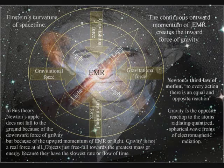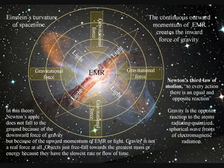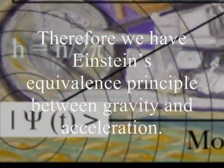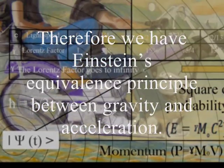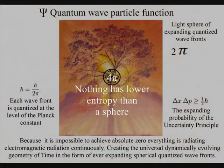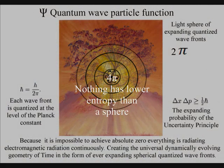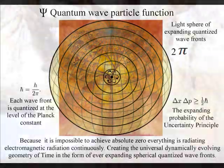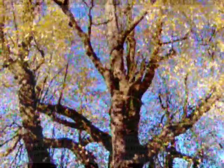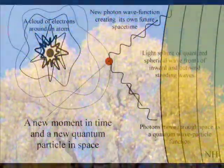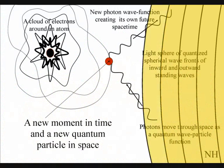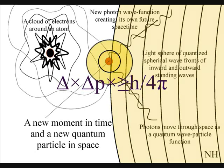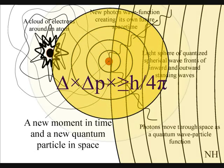In this theory, gravity is a secondary force to the electromagnetic force. Objects just freefall towards the greatest mass or energy because it has the slowest rate that time flows. The second law of thermodynamics falls out of this theory. The organization for the spontaneous disorganization of entropy is formed by the spherical symmetry of the quantum wave particle function. The spontaneous absorption and emission of light forms the flow of time, with photon energy cascading down, forming greater degrees of freedom for the flow of entropy.